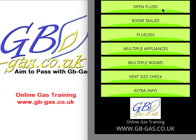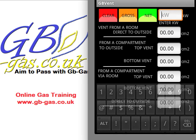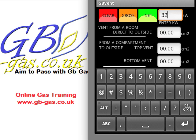If we go into the open fluid appliance, you will find that at the top right-hand side you put in the appliance size. So the open fluid appliance that you're dealing with, for argument's sake, could be 32 kilowatts. Then we decide if it's net or gross. If the appliance was installed before 2000, it's likely to be gross, so we click on the gross button.